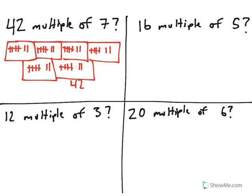So I ended a group with the number 42, which means yes, 42 is a multiple of 7, because 7 times 6 will equal 42.